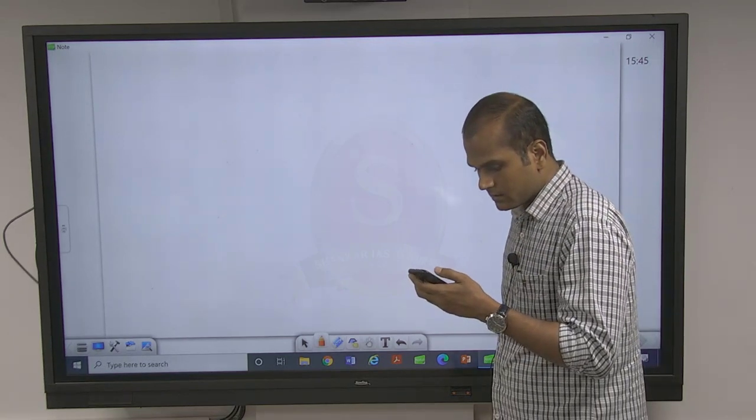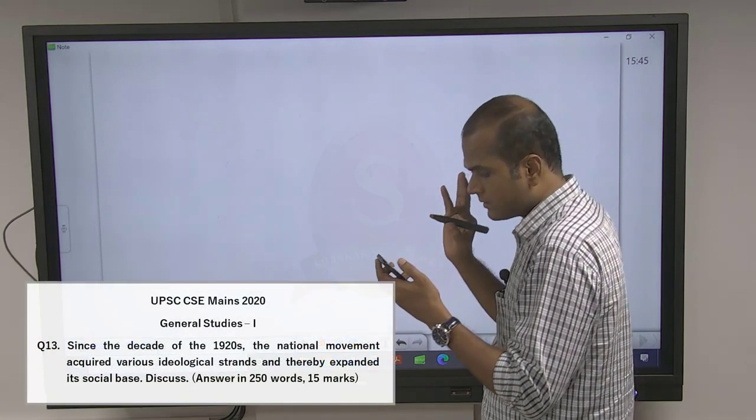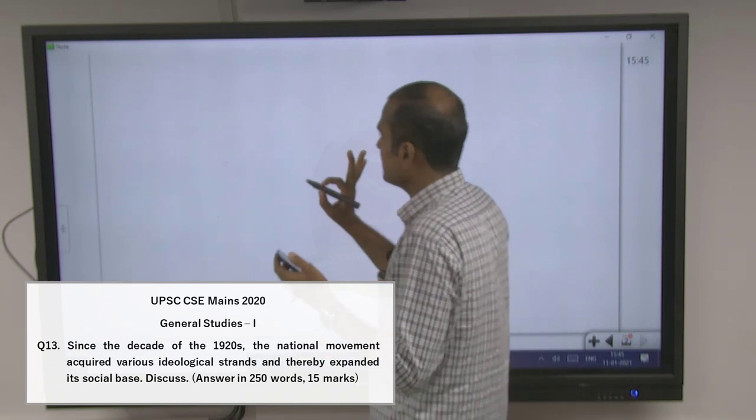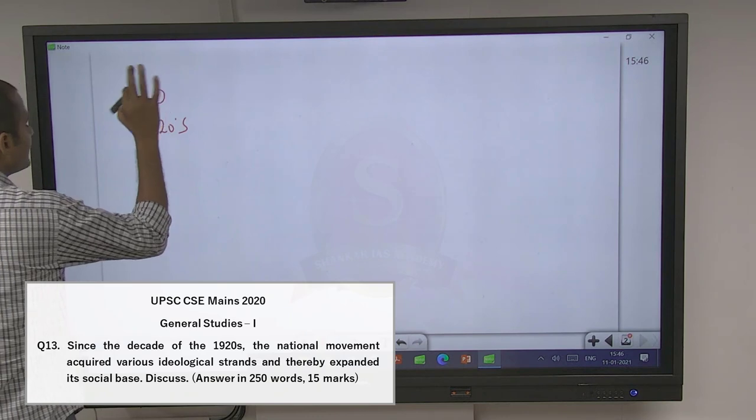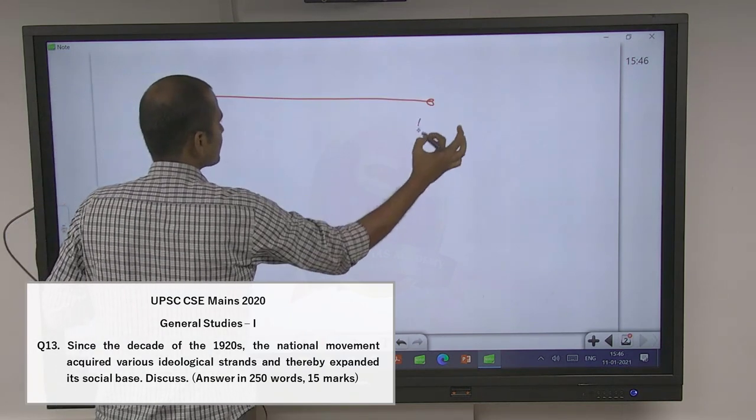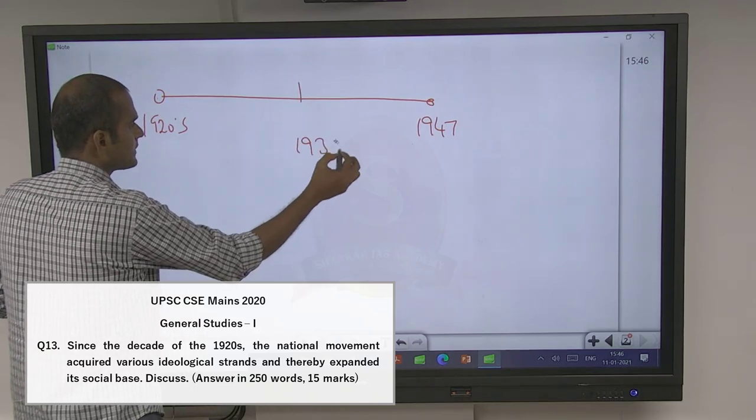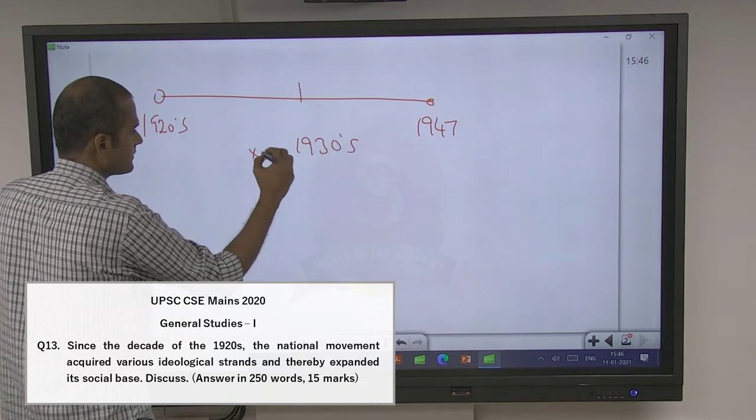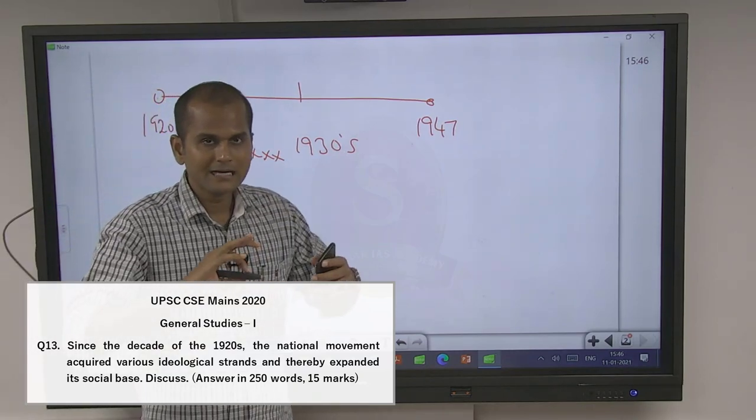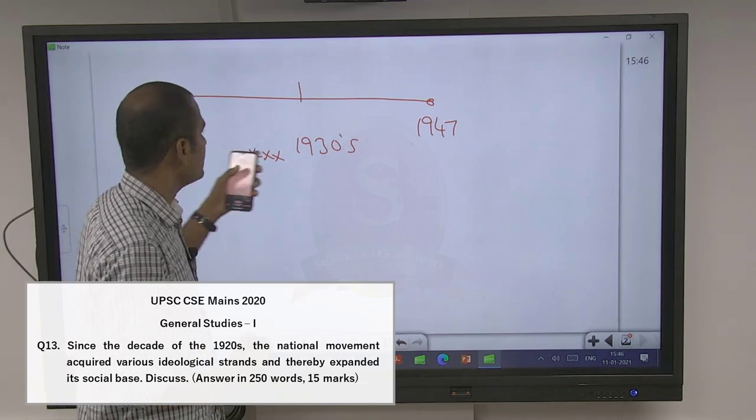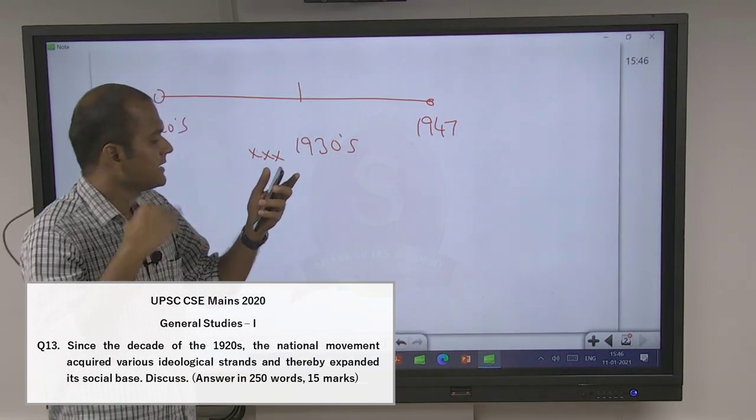Question number 13. Since the decades of 1920s - it's very clear, they have given 1920s. But what is the end? End is up to 1947. Normally decades means they try to finish up to 1930s, no. They never asked between 1920s to 1930s, they asked the entire thing. Since the decades of 1920s to 1940s. So the answer end is open.